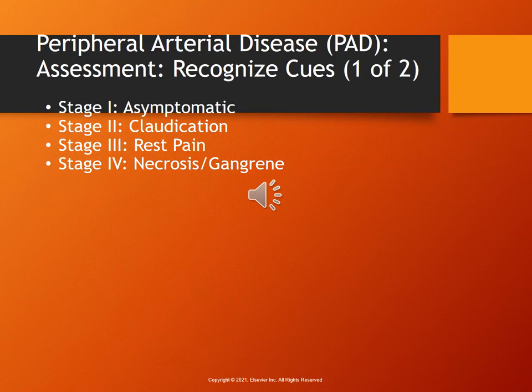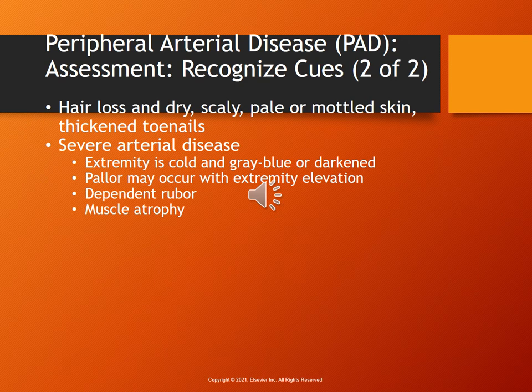The stages of peripheral artery disease: Stage 1 is asymptomatic. Stage 2 is claudication. Stage 3 is rest pain — they're still having pain even when they've stopped walking. Stage 4 would be necrosis and gangrene. On page 711, figure 33.4 shows a necrotic gray toe. Signs and symptoms of PAD include hair loss, dry and scaly skin, pale and mottled skin, thick toenails, decreased capillary refill, muscle atrophy, and gray, blue, or darkened skin. The extremity may also be cold.